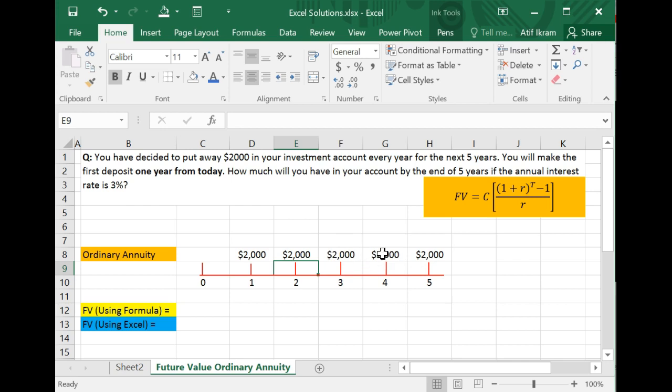This next $2,000 is going to grow for two years. This next $2,000 for one, and finally this last $2,000 is not going to earn any interest at all. So you're interested in answering how much are you going to have by the end of five years if all of that happens.